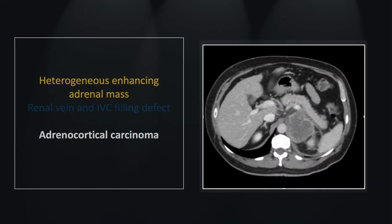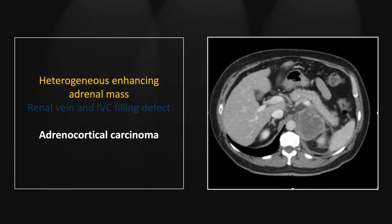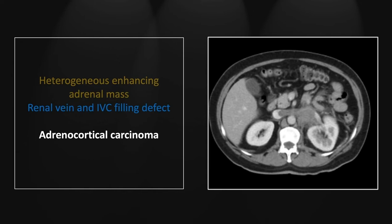Our next case is an adrenocortical carcinoma. The adrenocortical carcinoma is on that list of angioinvasive tumors as well, and it is important to distinguish from renal tumors as they frequently can be confusing. Here we see a suprarenal enhancing heterogeneous mass. More inferiorly, you can see another enhancing filling defect filling and expanding the left renal vein, and crossing the midline to enter the IVC.